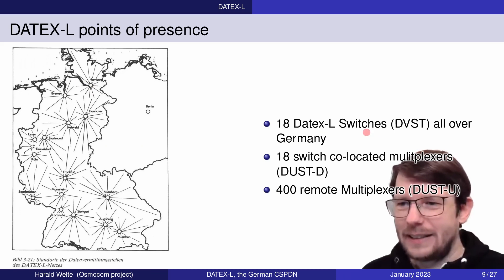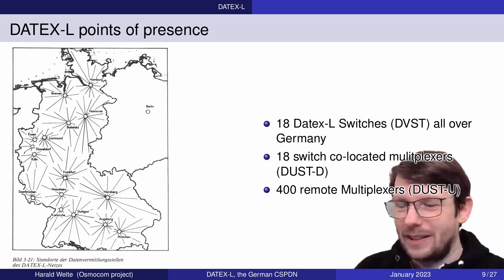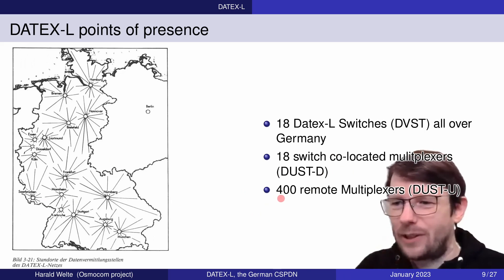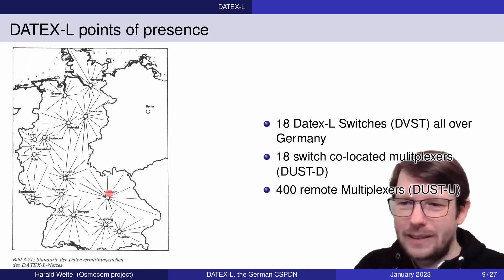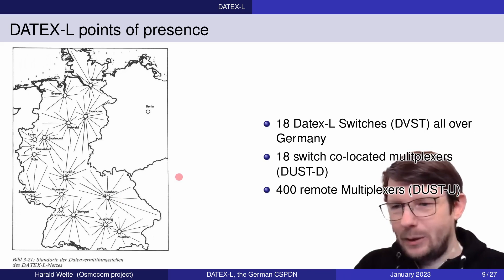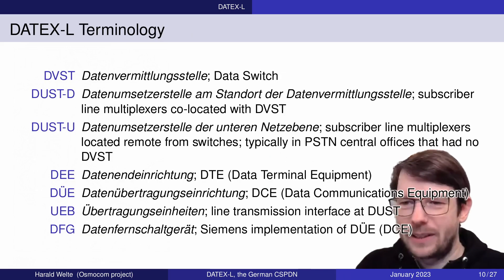There were 18 DVST data switches across Western Germany and West Berlin, each with a co-located DUST-D — Datenumsetzerstelle at the Datenvermittlungsstelle. The full capacity of the network was specified at around 400 remote multiplexes — DUST-Us — to aggregate subscriber lines close to the subscriber.